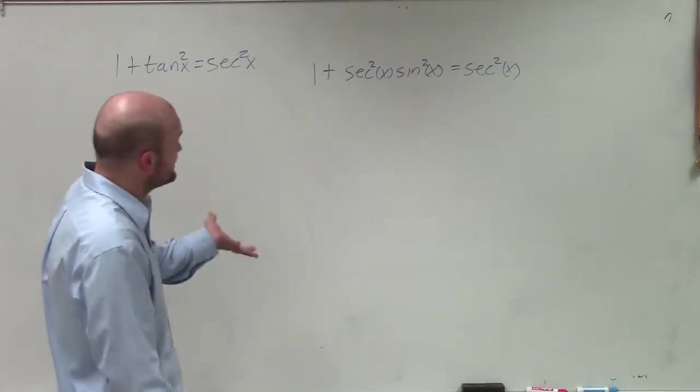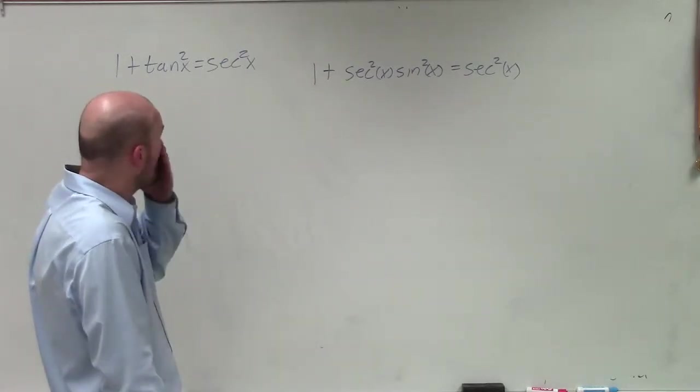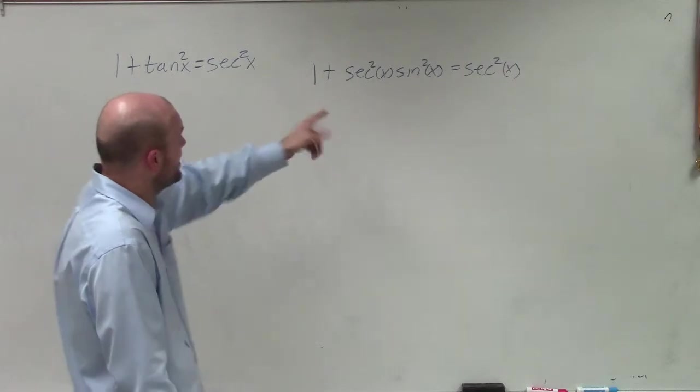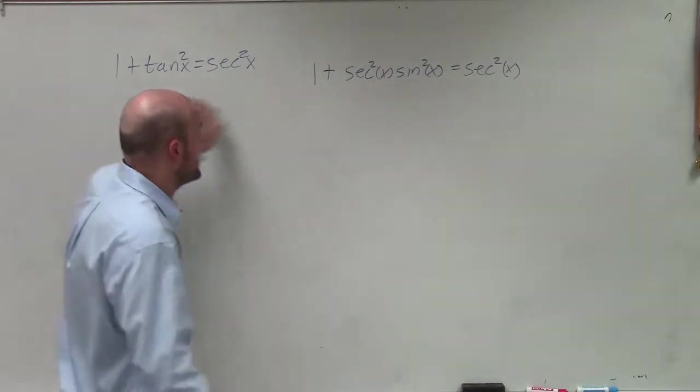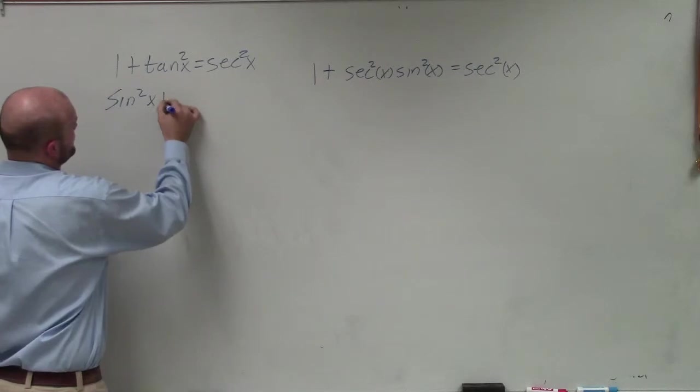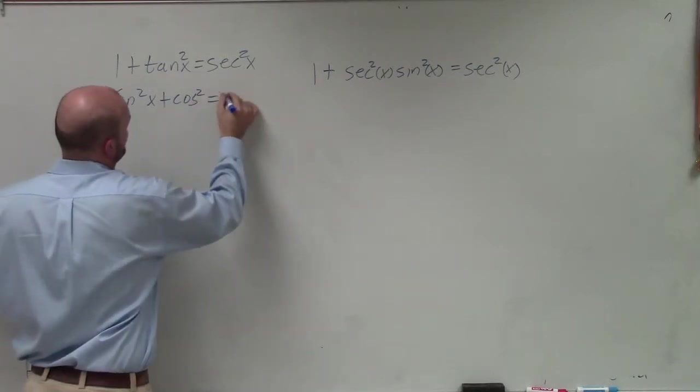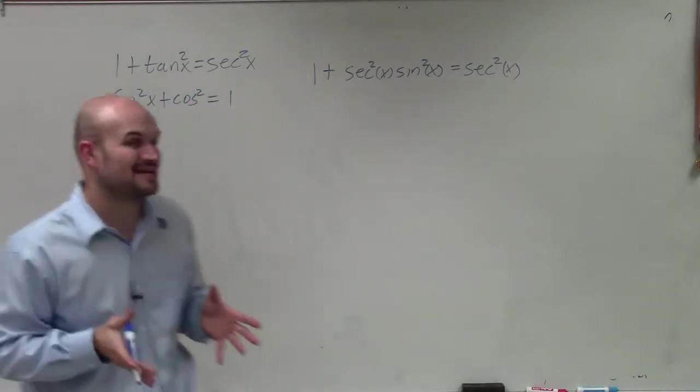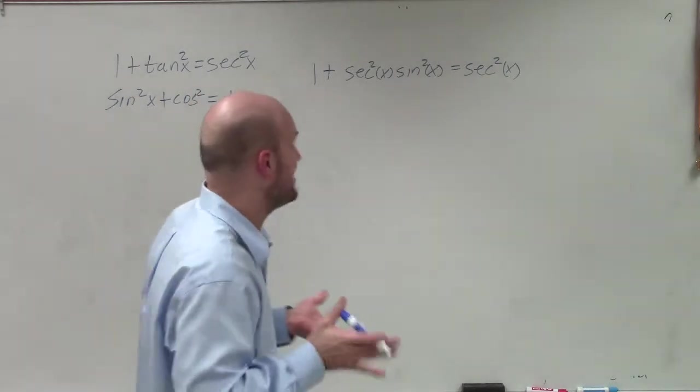So anyways, let's go ahead and look at that and see, well, maybe I could rewrite secant squared. Or my other option, actually, is I could have sine squared of x plus cosine squared of x equals 1. Now, I actually kind of like this second identity better.